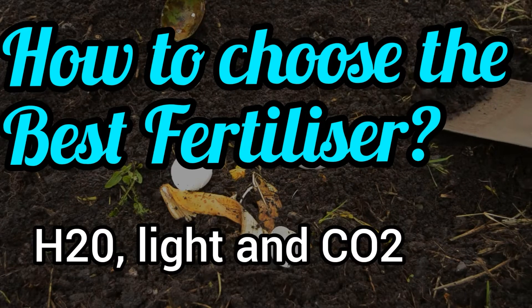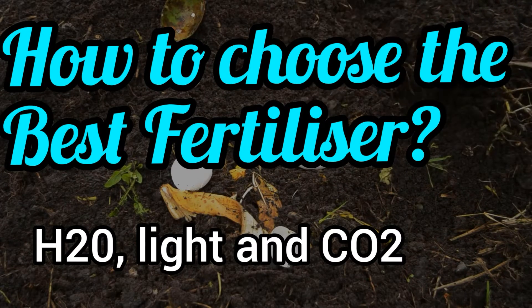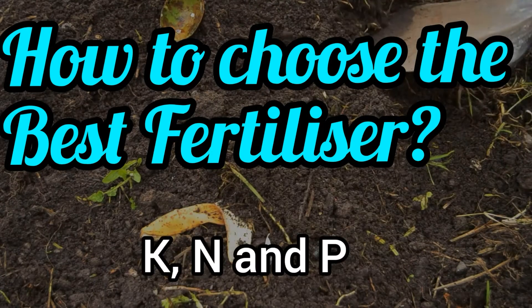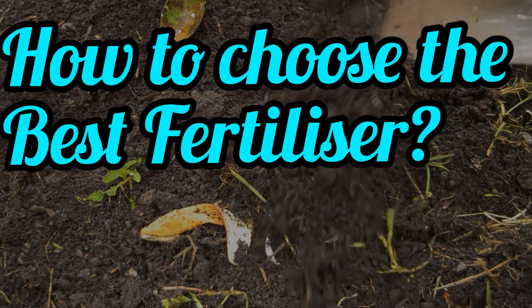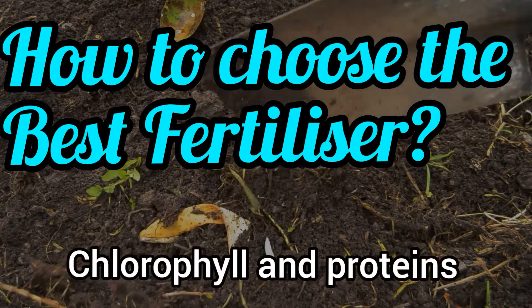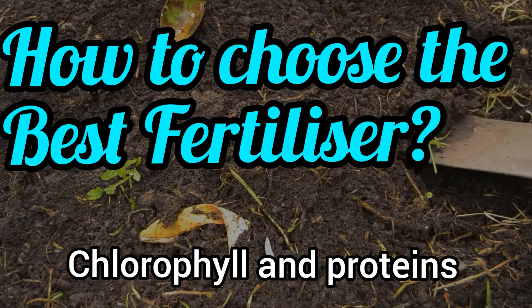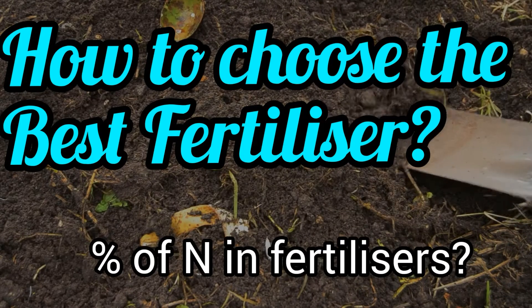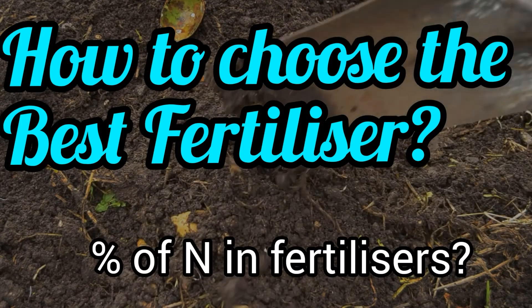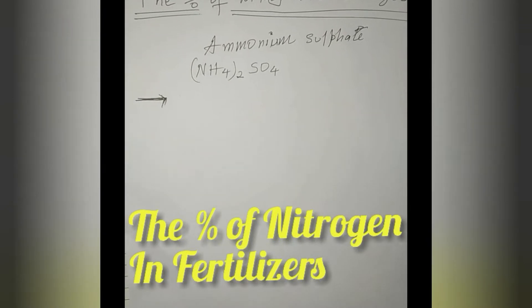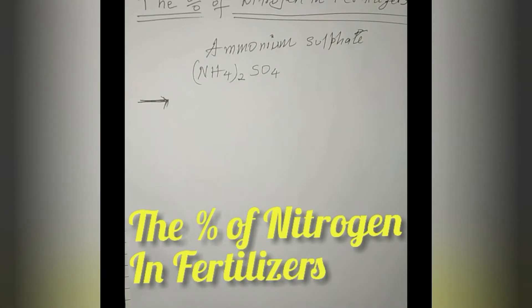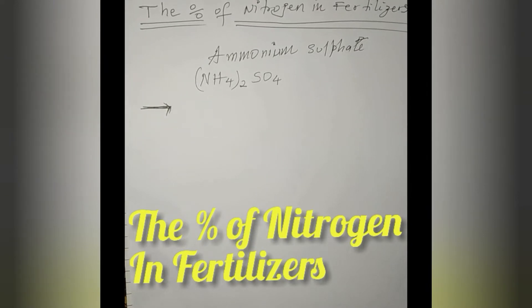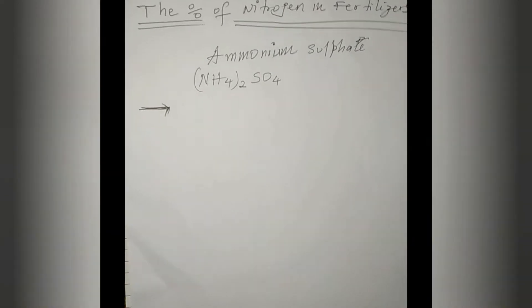Plants need water, light, and carbon dioxide. They also need other elements like potassium, nitrogen, and phosphorus. Plants need nitrogen for making chlorophyll and proteins. So how to find the percentage of nitrogen in fertilizers? Hi guys, welcome to the channel. How to find the percentage of nitrogen in fertilizers? It's very simple.